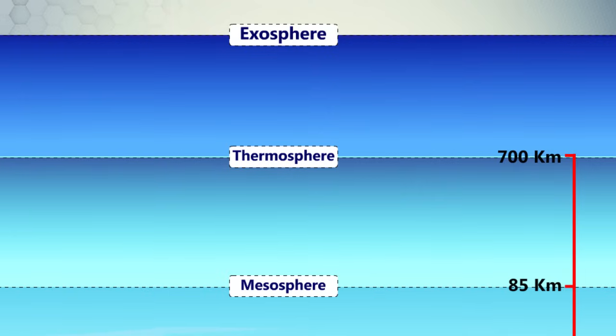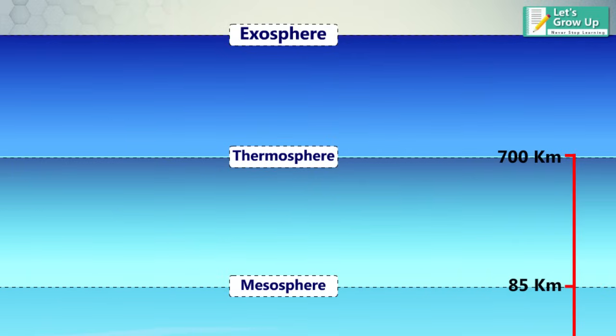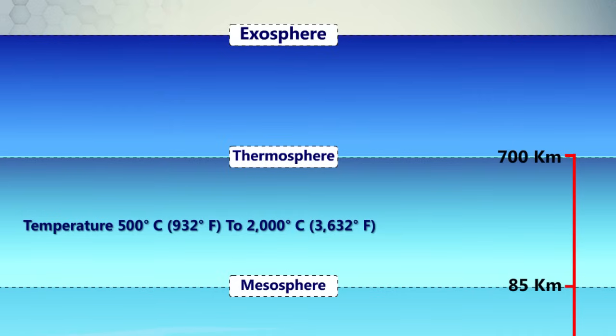The numbers of ions and electrons present also vary. The ionosphere reflects and absorbs radio waves, allowing us to receive short-wave radio broadcasts from other parts of the world. Temperatures in the upper thermosphere can range from about 500 degrees Celsius, 932 degrees Fahrenheit, to 2000 degrees Celsius, 3632 degrees Fahrenheit, or higher.